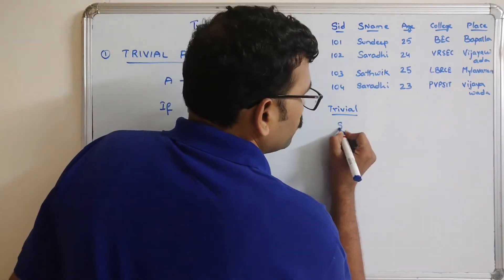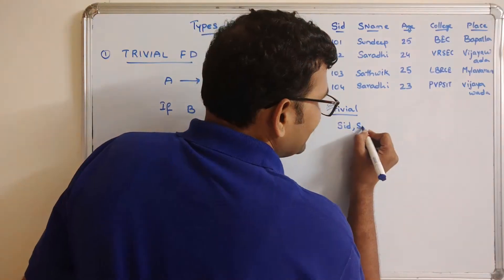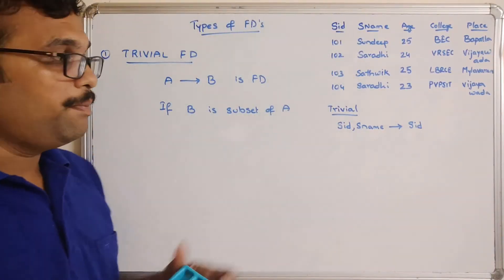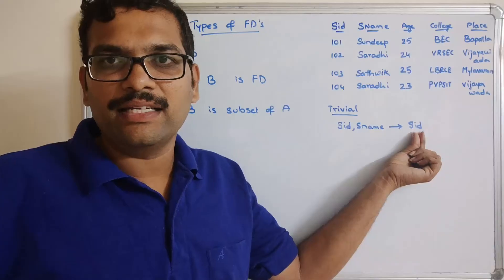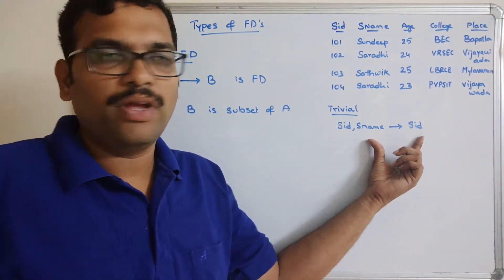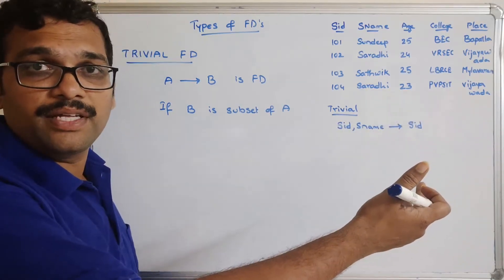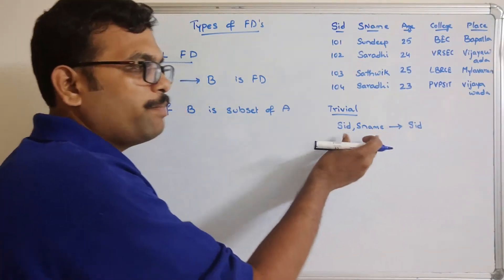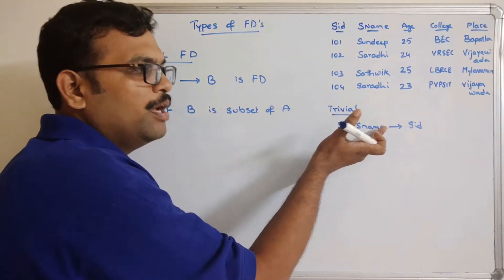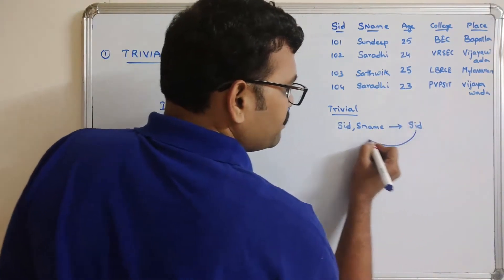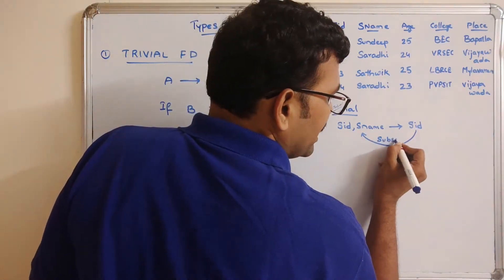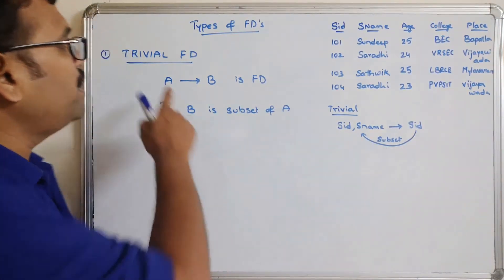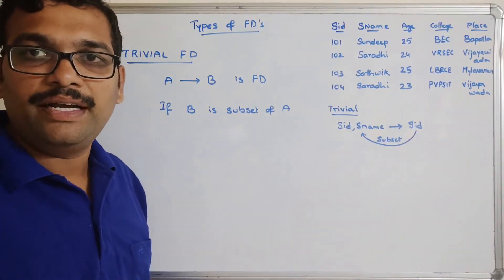For trivial, you can observe: the combination of SID and Sname can give SID. With the help of SID and Sname, we can get SID as an attribute — this is self-referential. Also, Sname tends to Sname is self-functional dependency. SID and Sname together determine SID, which is a subset of the determinant. Such dependency is called trivial functional dependency.